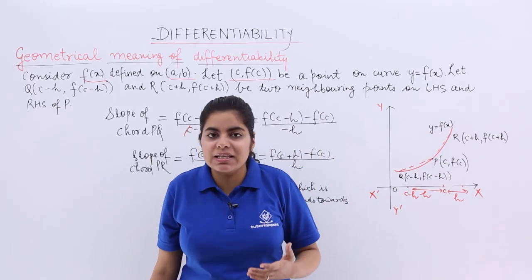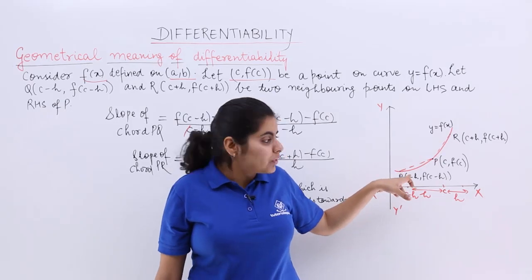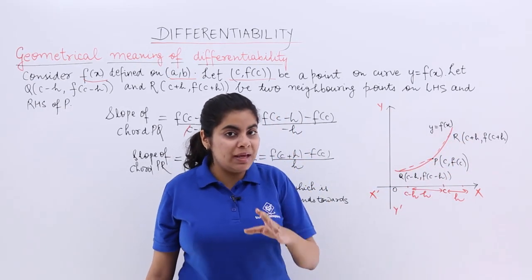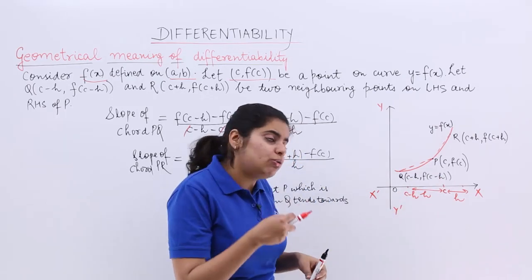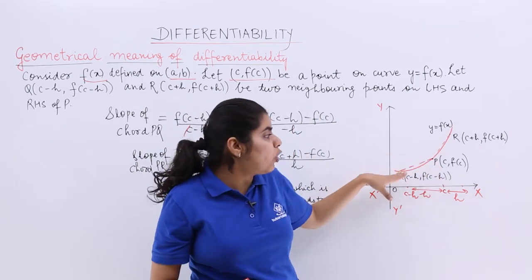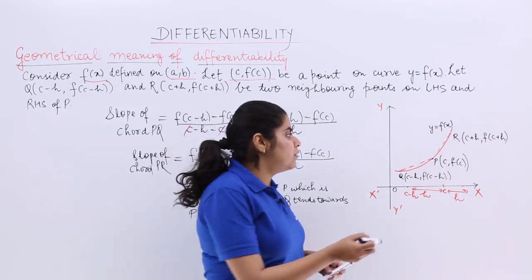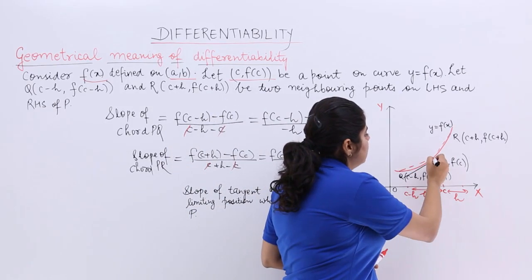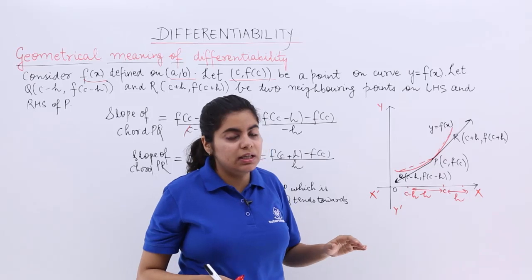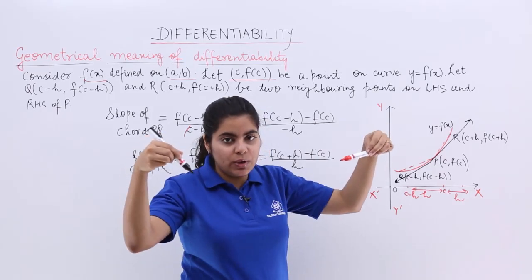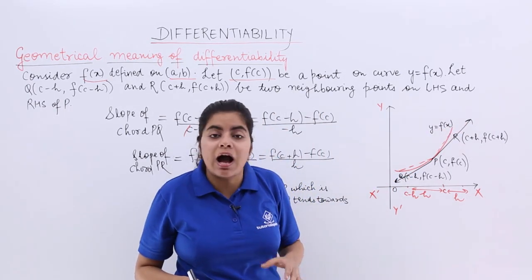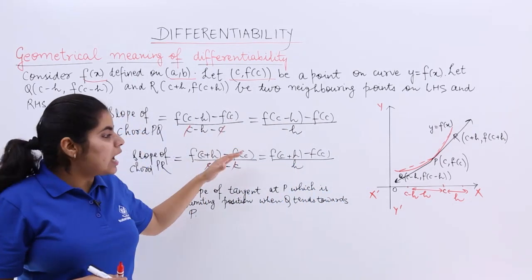My next task is to assume that Q tends towards P, and similarly R tends towards P. Basically, as Q goes nearer and nearer to P, there will come a time when P and Q are joined in such a manner that we have a unique tangent. When Q tends towards P and R tends towards P, the points go near to P and there will be a point when we have a tangent — and that tangent will be unique.